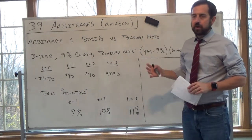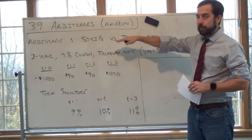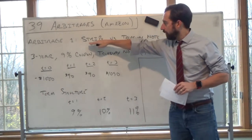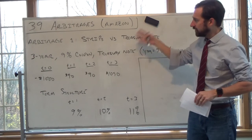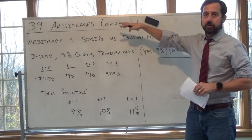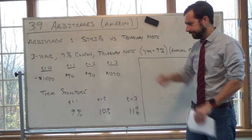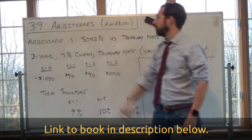Okay, so today I'm going to do an arbitrage in strips and treasury markets. So this is a zero-coupon bond market and a treasury note, treasury bond markets. This is actually an arbitrage out of a book that I recently put on Amazon. The title is 39 Arbitrages.